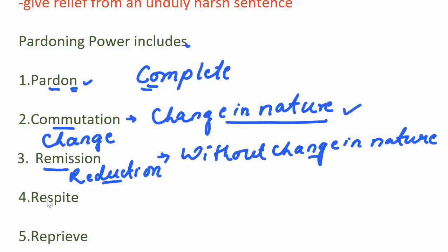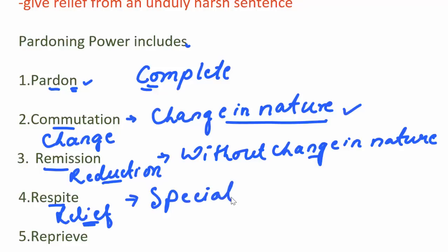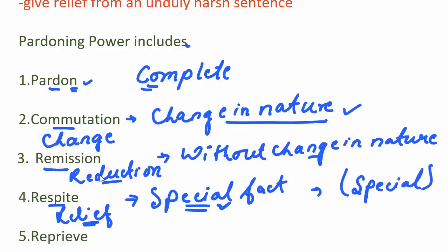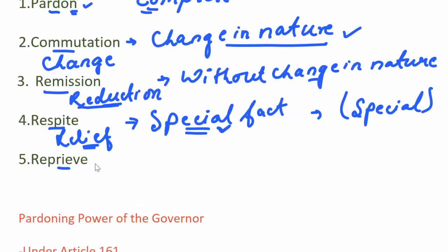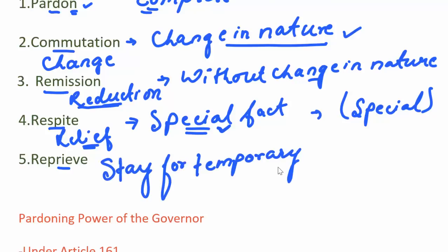Next is respite. Respite means relief — a period of temporary relief or interval. In respite, due to some special facts, for example due to disability of the convict or pregnancy of the woman offender, relief can be awarded in the form of a lesser sentence. Keep the keyword: special. Next is reprieve. In reprieve, a stay of the execution of sentence for a temporary period is provided. This has been provided to enable the convict to apply for pardon or commutation from the President.